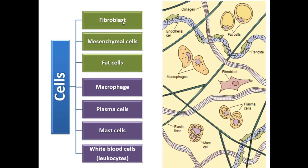The cells of connective tissue include fibroblasts, mesenchymal cells, fat cells, macrophages, plasma cells, mast cells, and white blood cells. Those shown in green are permanent residents — they are born in connective tissue and die there. Those shown in purple originated from the bone marrow, circulate in blood, and enter the connective tissue by crossing the blood vessel walls.